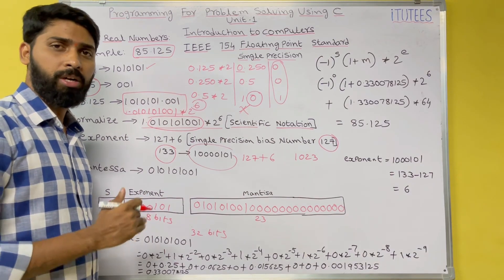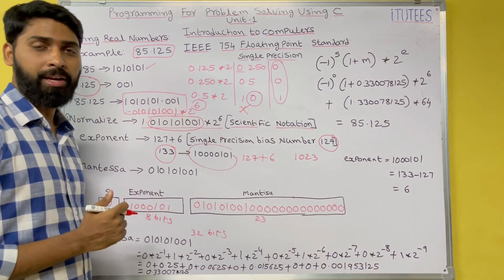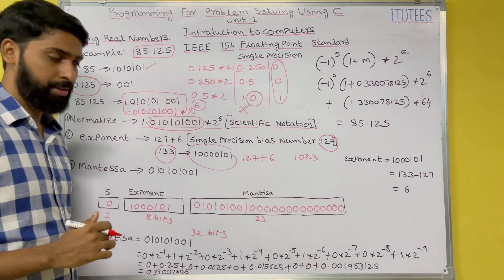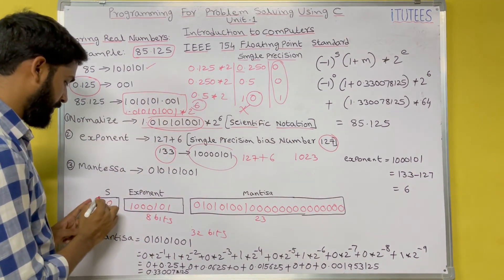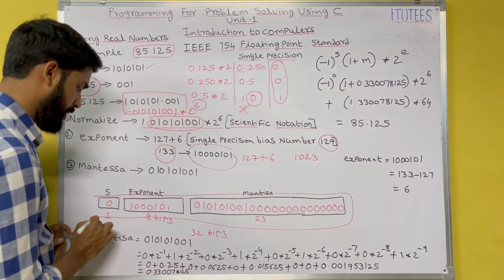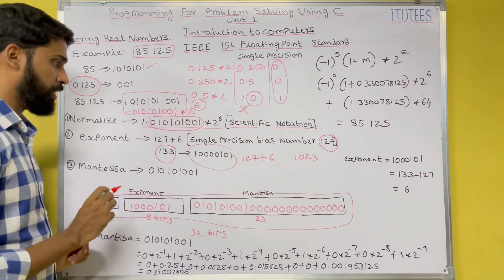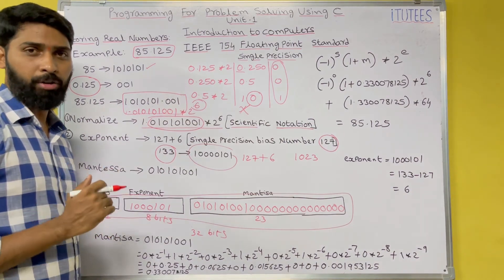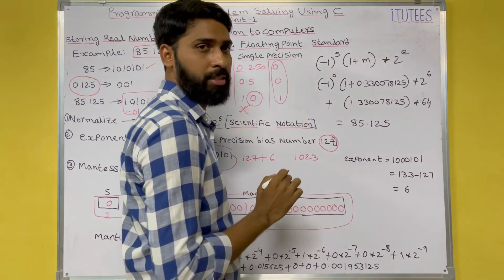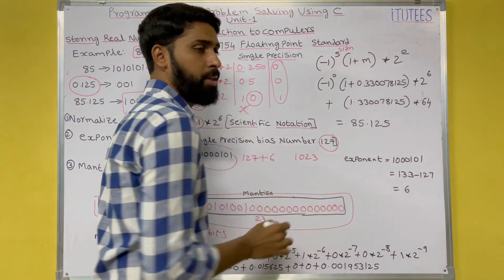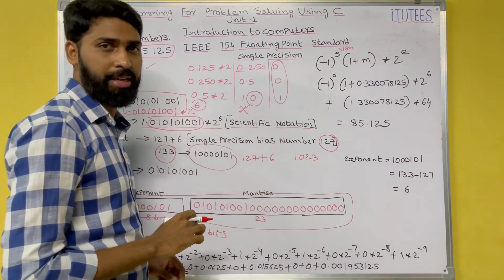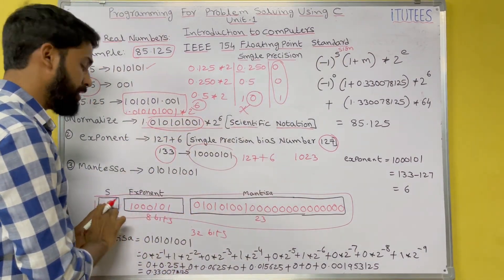Now we are going to see how we can retrieve a real number from the computer. The formula is: value = (-1)^S × (1 + M) × 2^E, where S is the sign bit, M is the mantissa, and E is the unbiased exponent. Since the sign bit S is 0, the sign factor is (-1)^0 = 1.